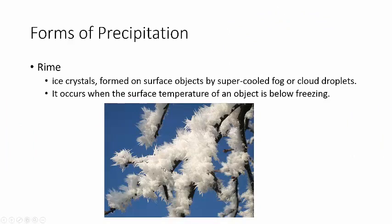Rime looks very pretty. It's ice that forms because you have super-cooled fog. When the super-cooled fog touches a cold surface — like a tree — it immediately produces rime. Unlike snow, hail, freezing rain, or sleet — which we don't really see in Florida, though hail does happen here about three times a year — rime is something you can actually see anytime you want in your freezer. It's called freezer burn.